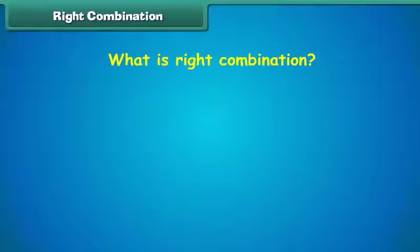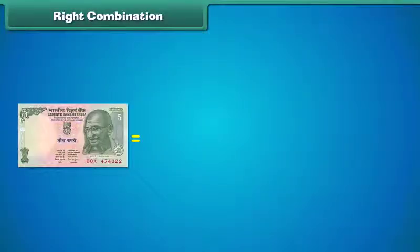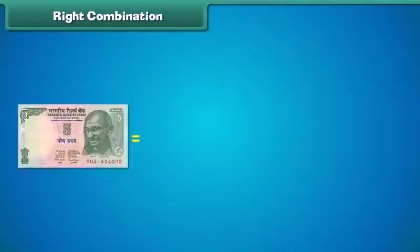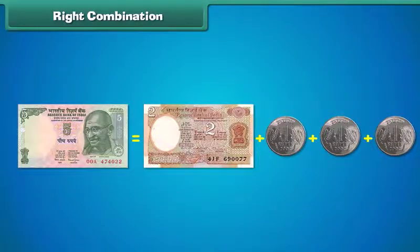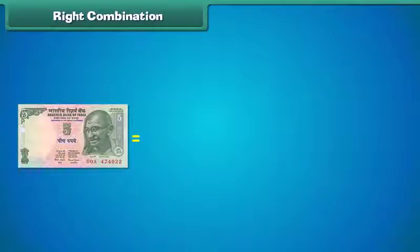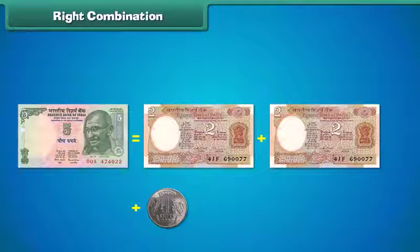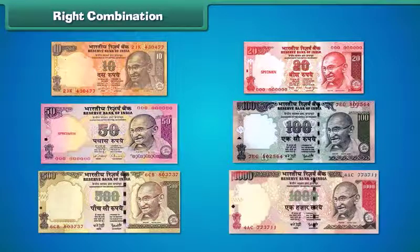Let us learn about some right combinations of notes and coins. One 5 rupee note is equal to the sum of 5 one-rupee coins. One 5 rupee note is also equal to the sum of 1 two-rupee note and a 1 rupee coin. All these are the right combinations. Similarly, we can have different right combinations for 10, 20, 50, 100, 500, and 1,000 rupee notes.